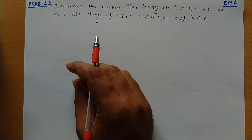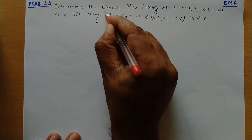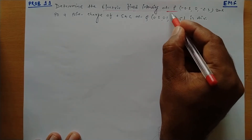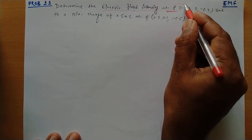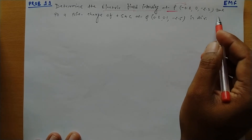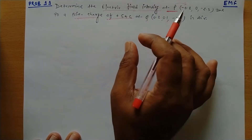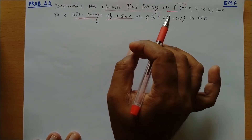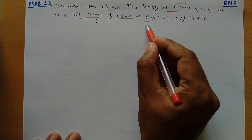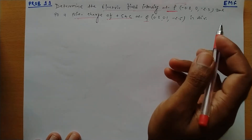So basically, we need to find the electric field intensity at point P whose coordinates are given as (-0.2, 0, -2.3), due to a point charge of 5 nano coulomb placed at Q, which is (0.2, 0.1, -2.5) in the air.